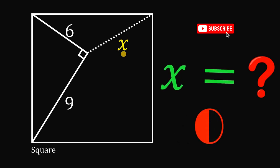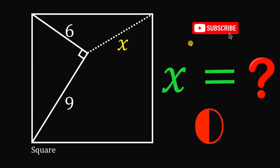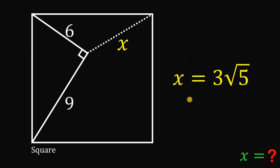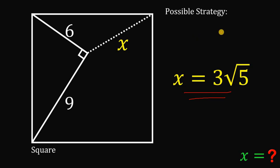And now let's answer this question together. So before we answer, I will show you first the answer: the length of the segment X must be equal to 3 multiplied by the square root of 5. We have two common strategies to answer this kind of question — but here's the common solution.